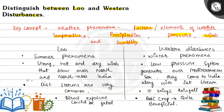So to summarize: Loo is a summer phenomenon — strong, hot, dry winds. Western Disturbances are a winter phenomenon — low pressure systems that bring rainfall. Direct exposure to Loo could be fatal, whereas Western Disturbances are beneficial to crops. That's it for this video. I hope you guys understood it well. Best of luck, thank you.